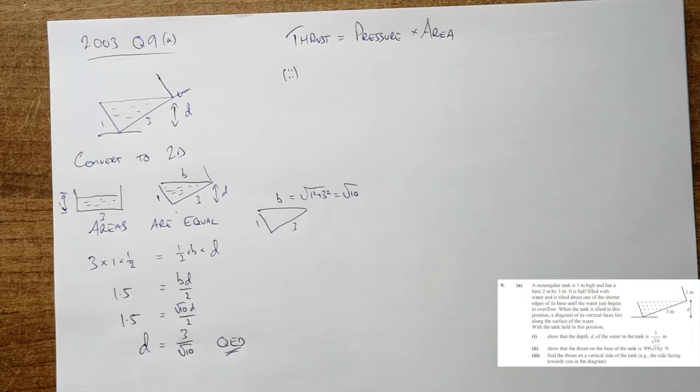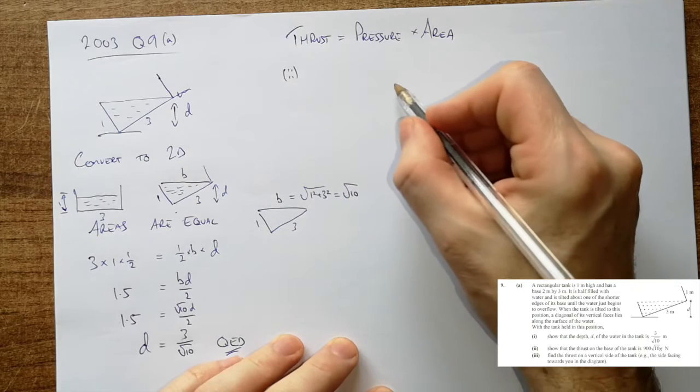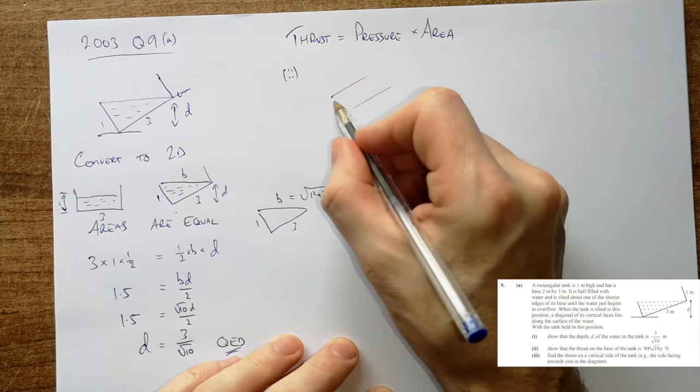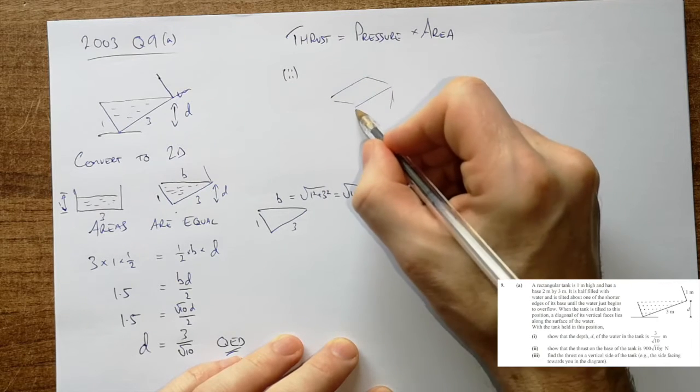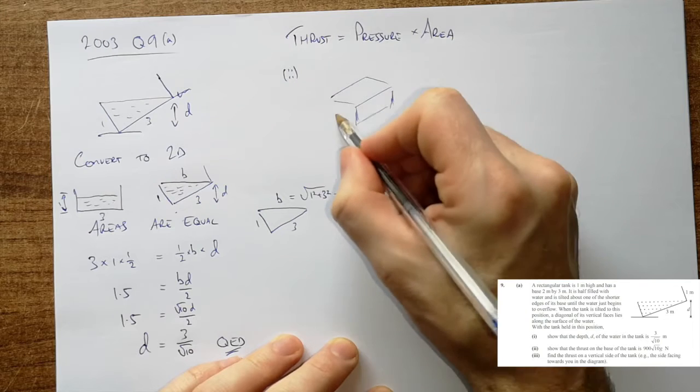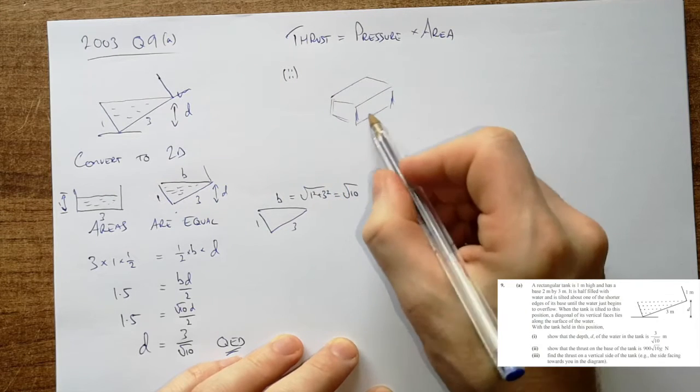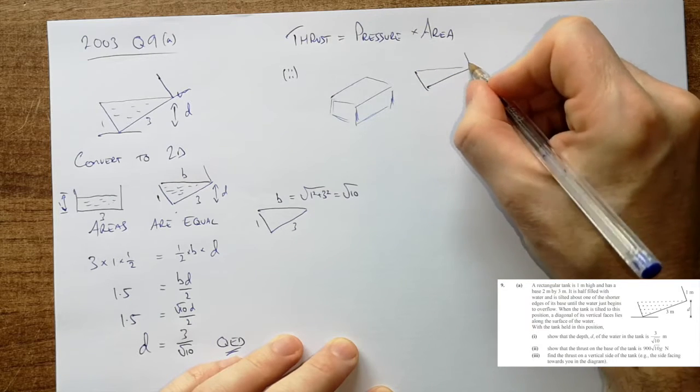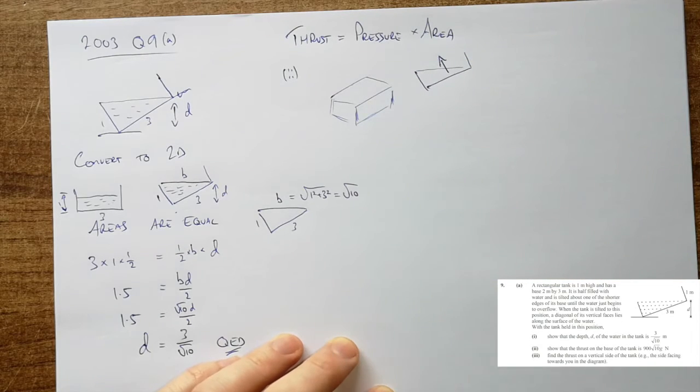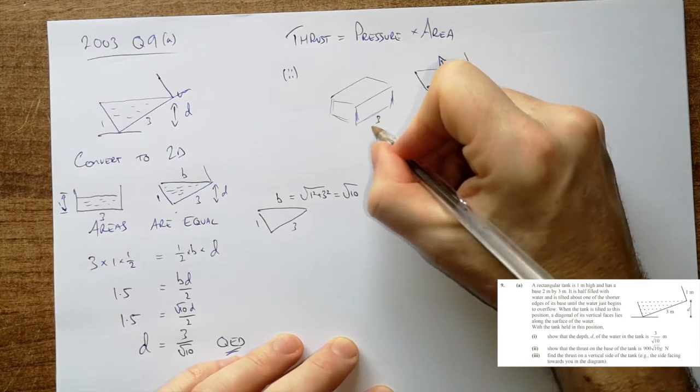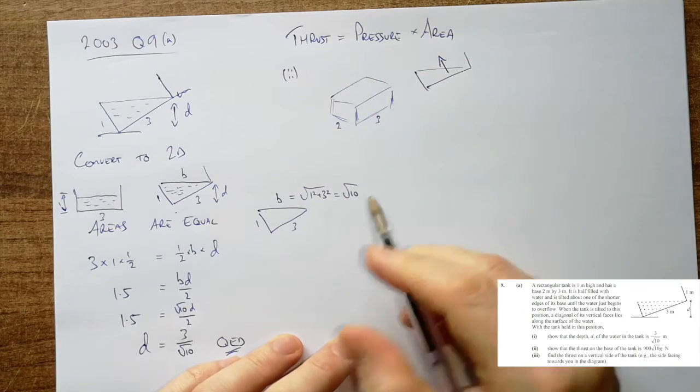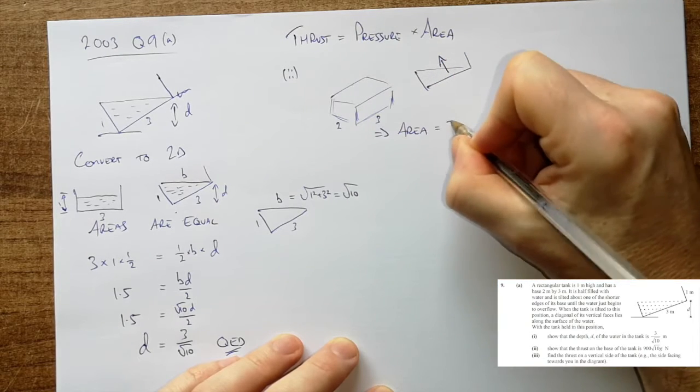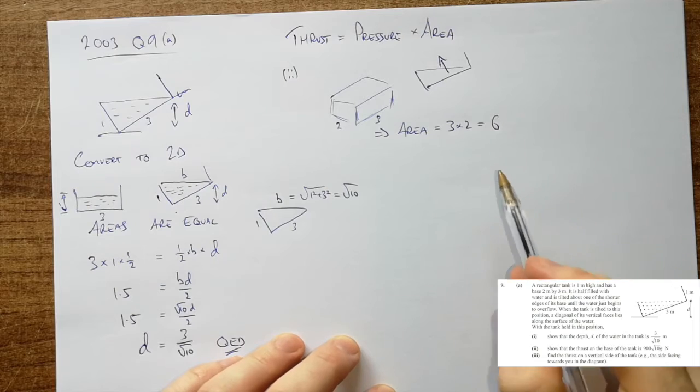Show the thrust on the base of the tank is that. So again we have a nice little one, they're going to show us where we're going to go. If we think of this, if we just have a look at this little thing here, there's our tank there tipped over a little bit. So we're looking at the thrust. If you look at it from the side here, thrust going up there on the base. So we know that that's 3 and that's 2, so the area is 3 by 2 is 6.